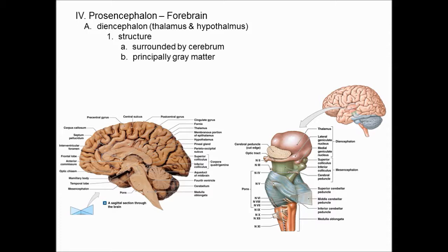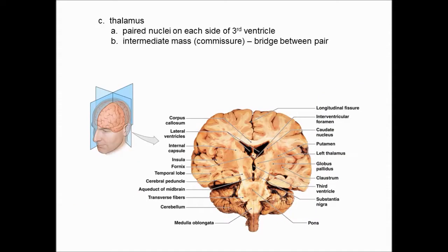This is a sagittal section, so the diencephalon is completely surrounded by the cerebrum. Both parts are dark-staining structures made up of many nuclei. The thalamus consists of two egg-shaped large nuclei on each side of the third ventricle. Here's the third ventricle and the lateral ventricle — on each side of the third ventricle are these large egg-shaped nuclei we call the thalamus.